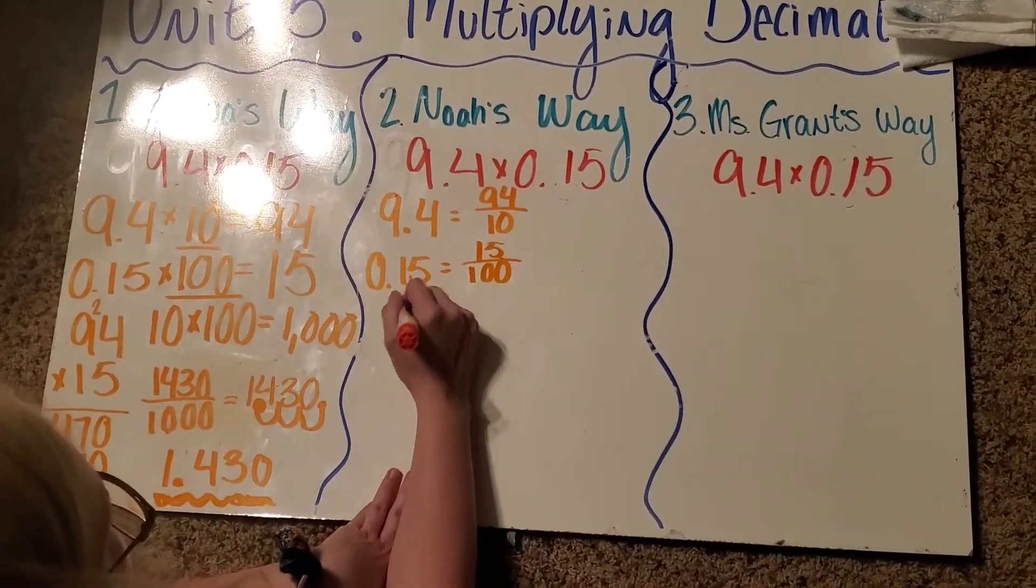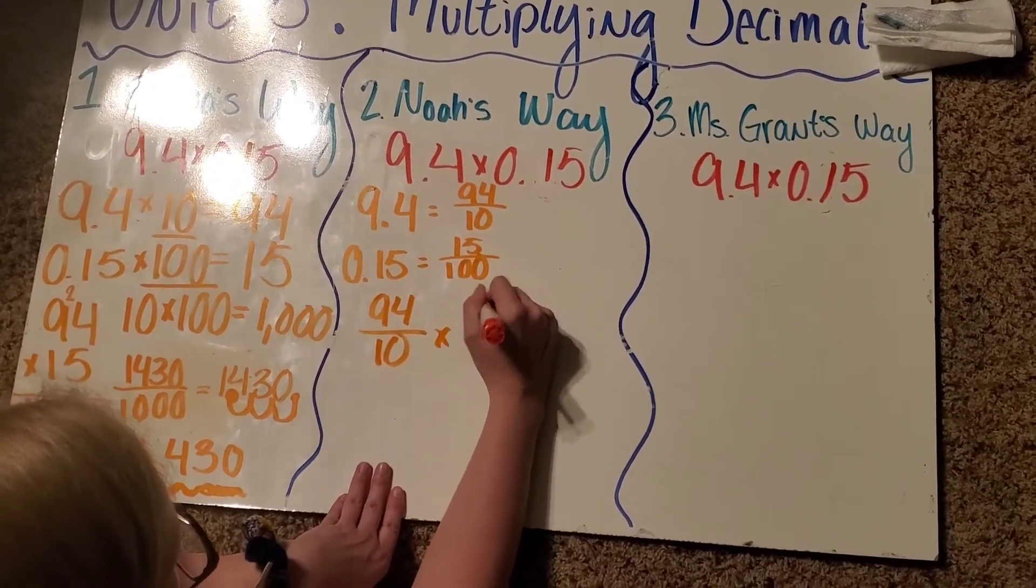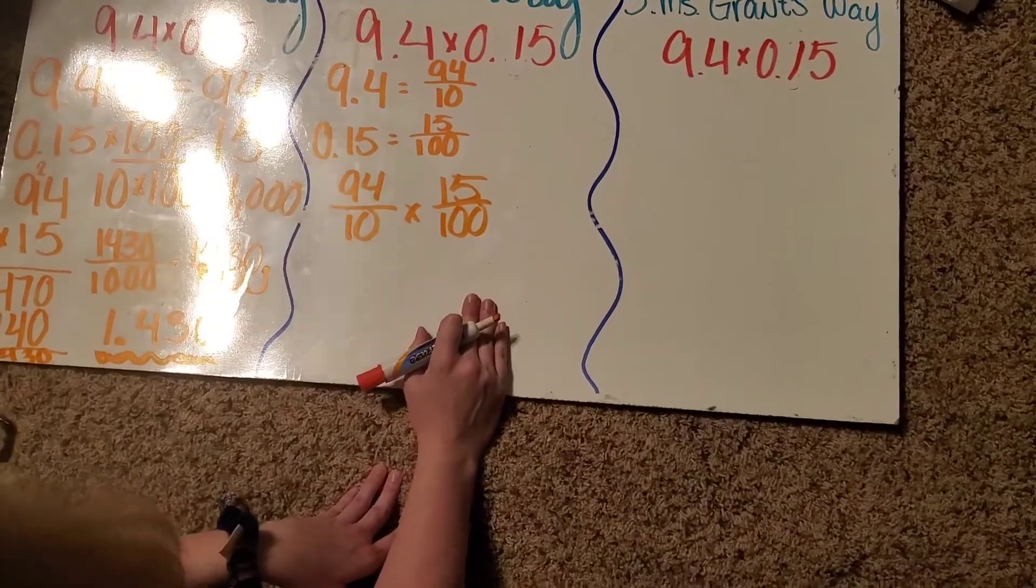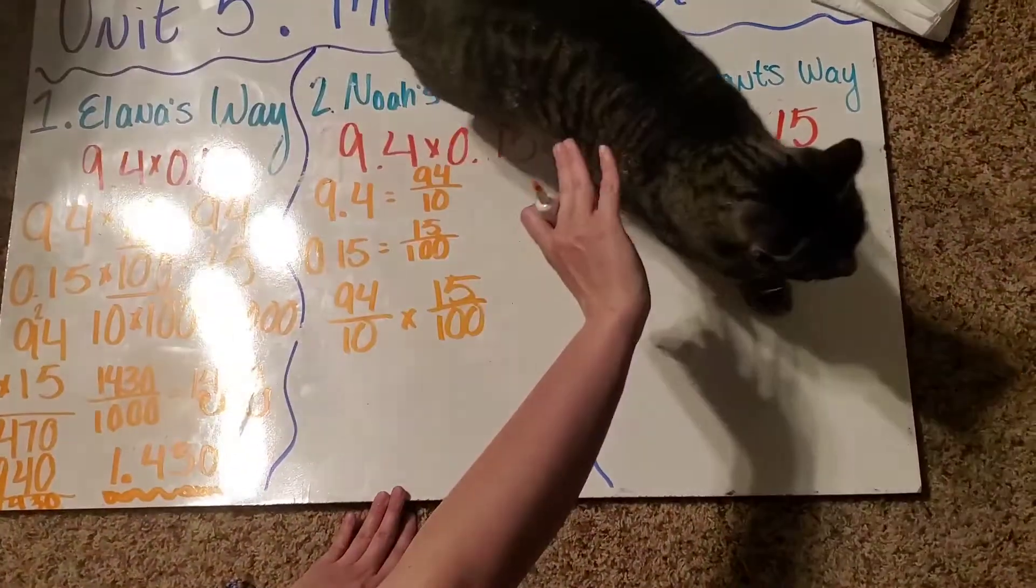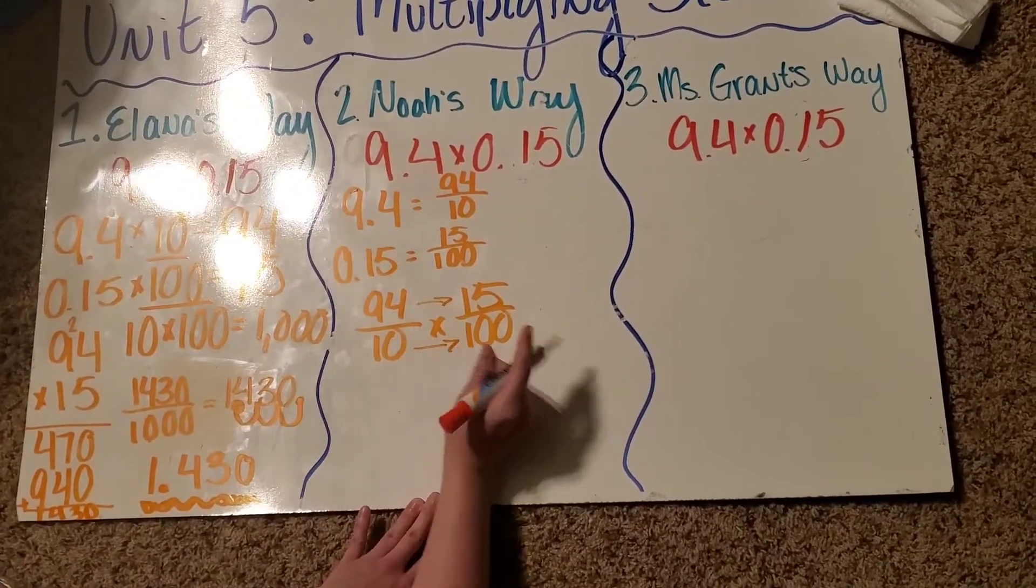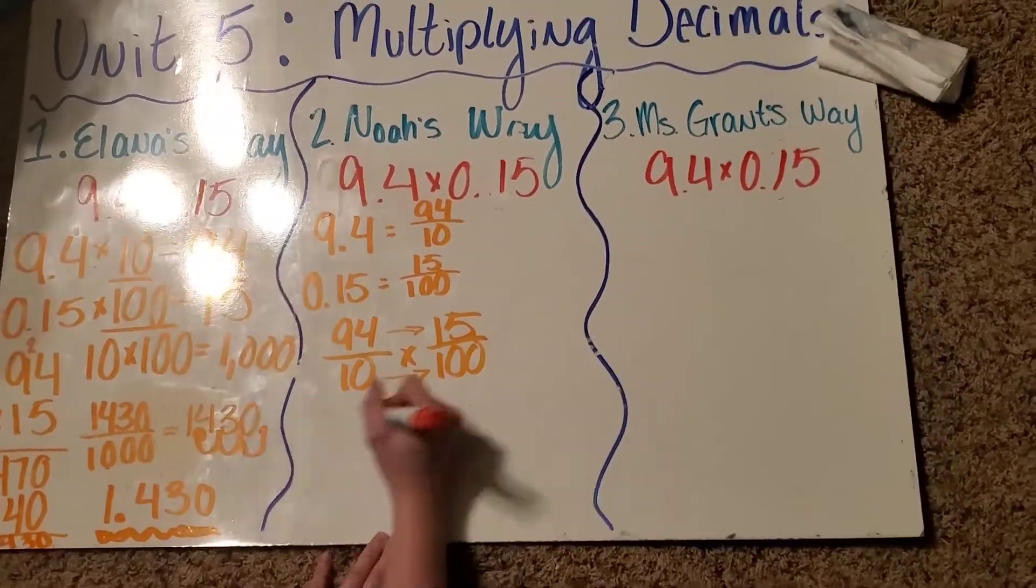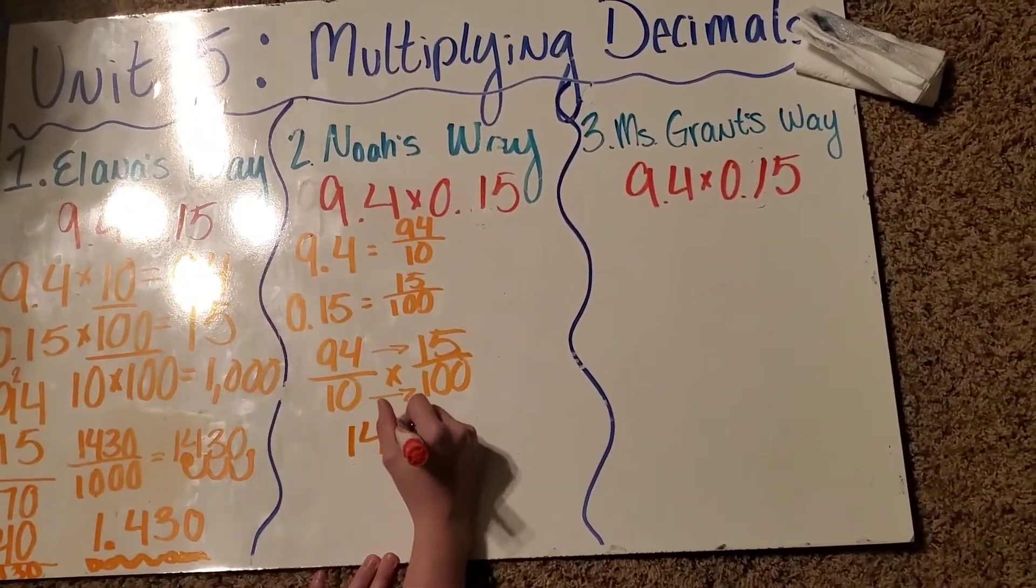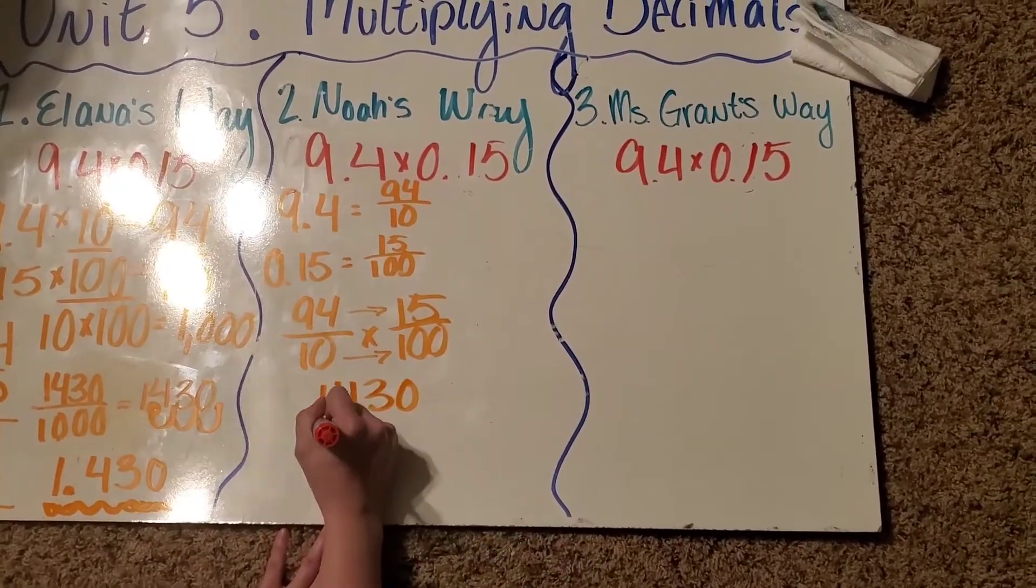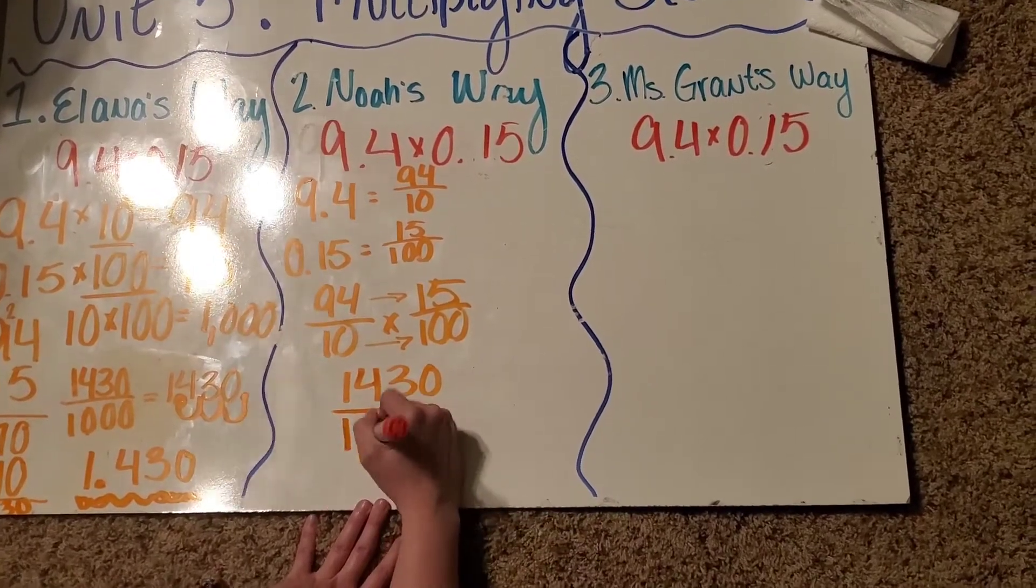Now, all we have to do is multiply those. So, remember when you're multiplying, you just multiply straight across for fractions. So, we know 94 times 15, we already did that, is 1,430. And 10 times 100, we already did that as well, is 1,000.